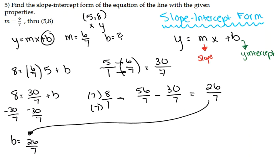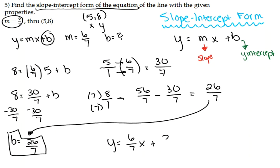Now that we have our b term, we can rewrite our final equation in slope-intercept form. We're going to write y equals m, which is 6 divided by 7, x plus our b term, which we've solved for. We have found that that is 26 divided by 7. And that will be the final slope-intercept form of our equation of our line.